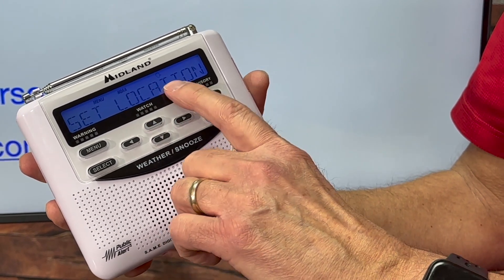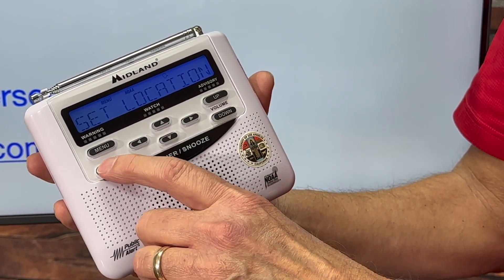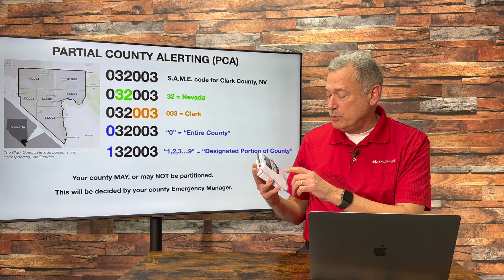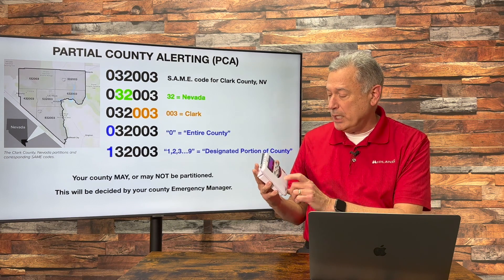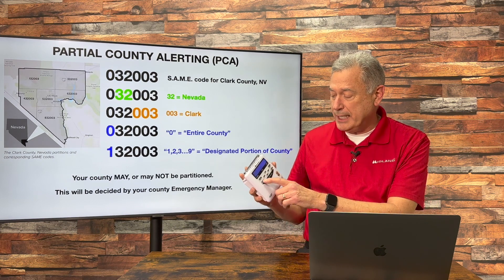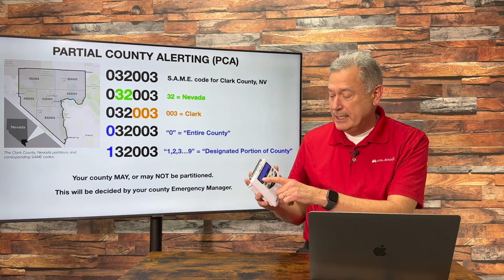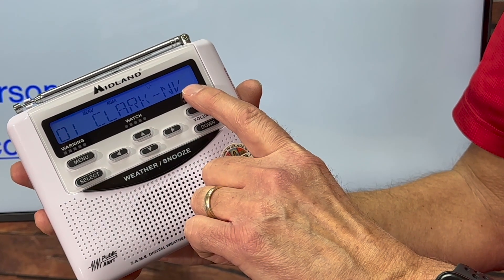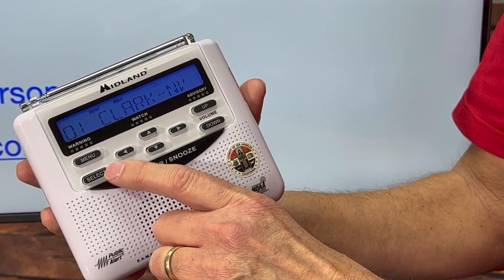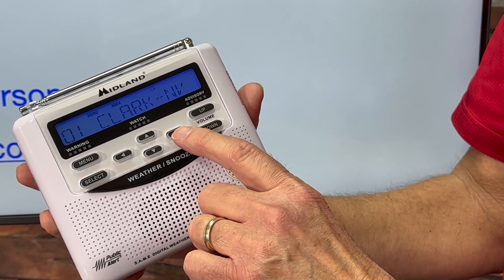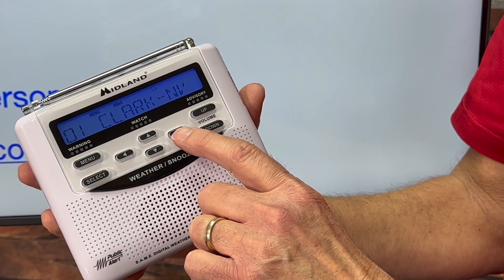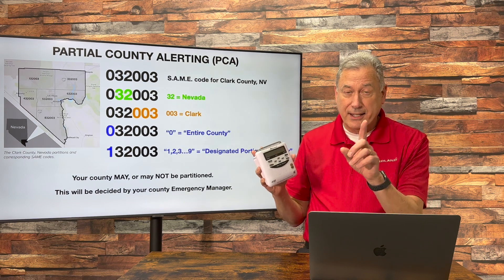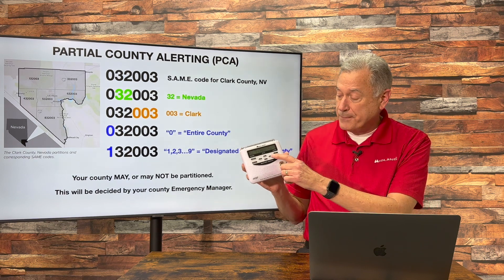Press the select button. It tells me I've set my radio for a single county, which is what I did. And when I press the select button again, it says 01 Clark, Nevada. This radio has been set to only alert for Clark County, Nevada, but in its current mode, it's going to alert for the entire county. Here's how to change that.